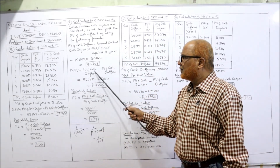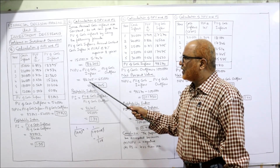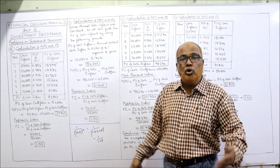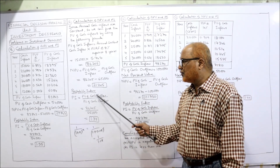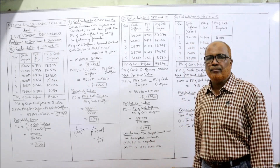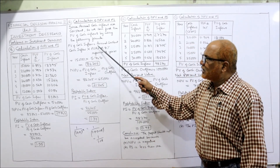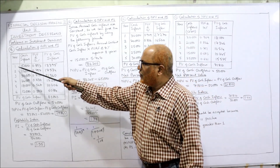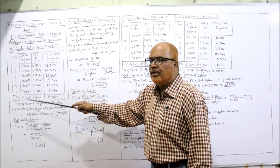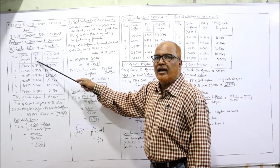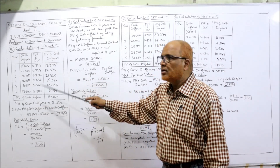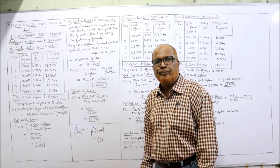NPV = PV of cash inflow − PV of cash outflow = 86,205 − 65,000 = 21,205 (positive — acceptable project). PI = 86,205 ÷ 65,000 = 1.33, which is greater than 1, so accept. If you prefer, you can also make a table for 8 years with 15,000 each year and PV factors at 8%, multiply, and sum — you will again get approximately 86,205.